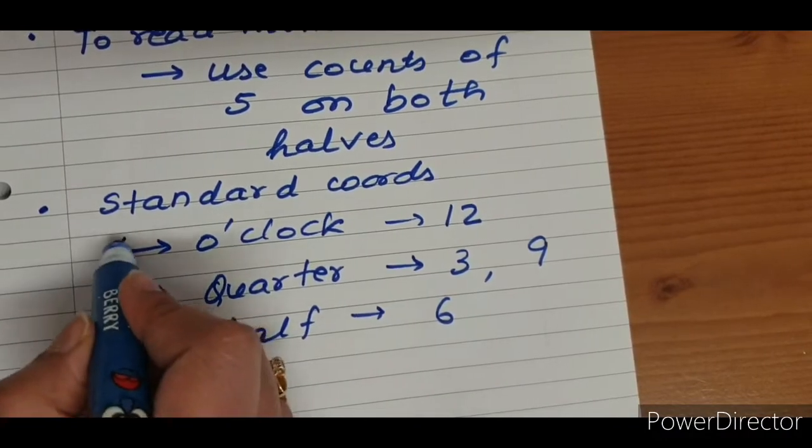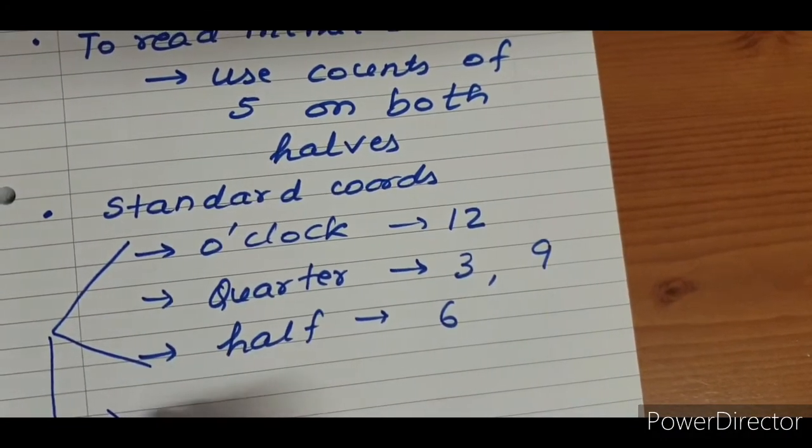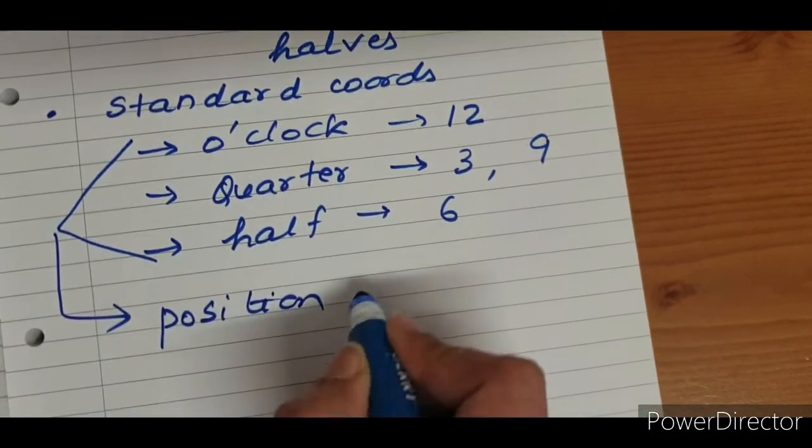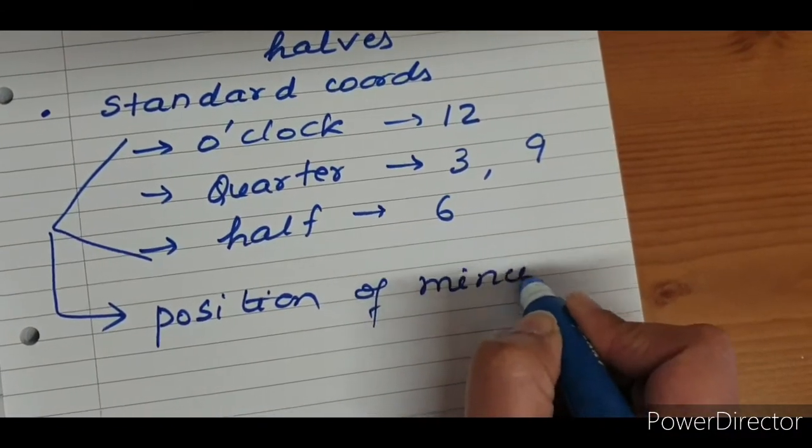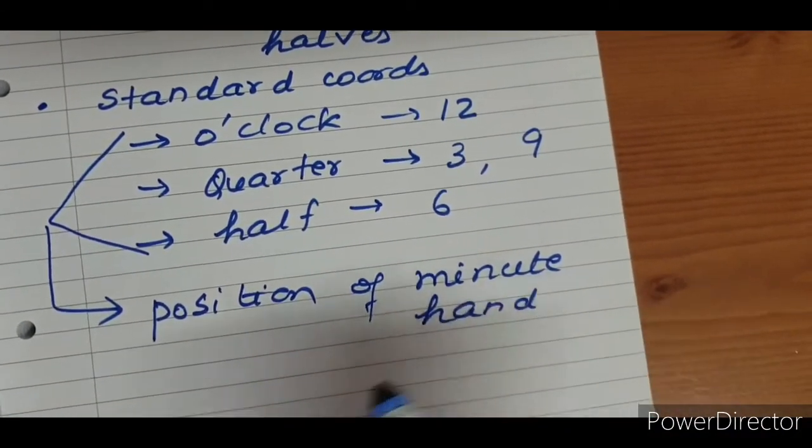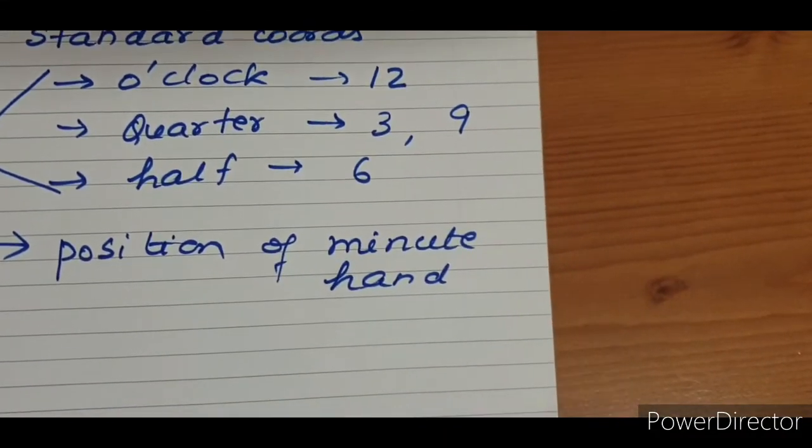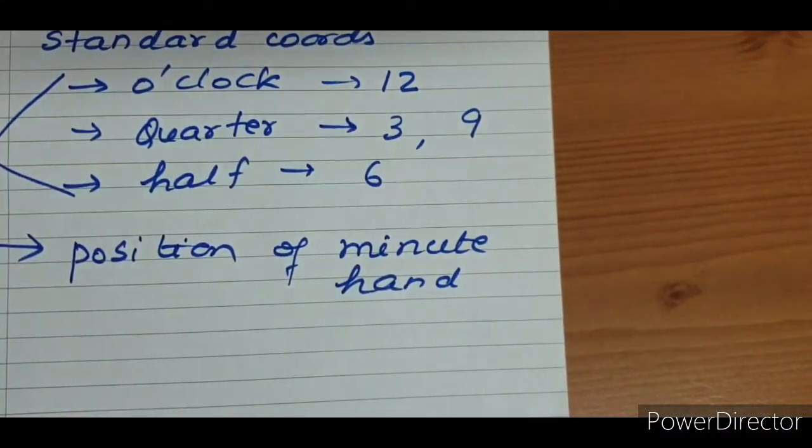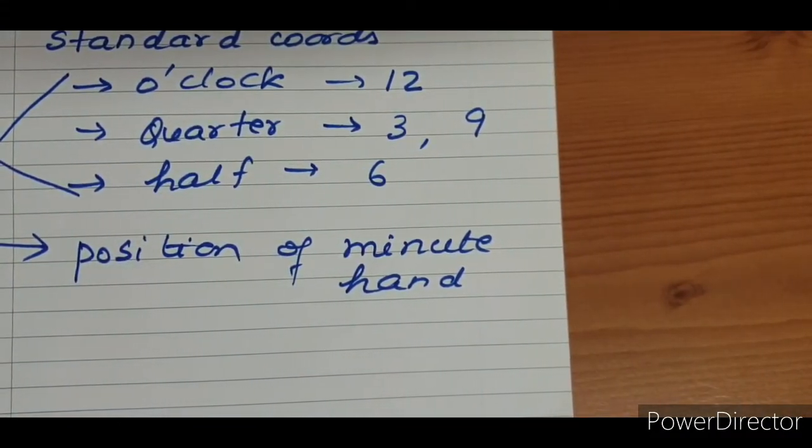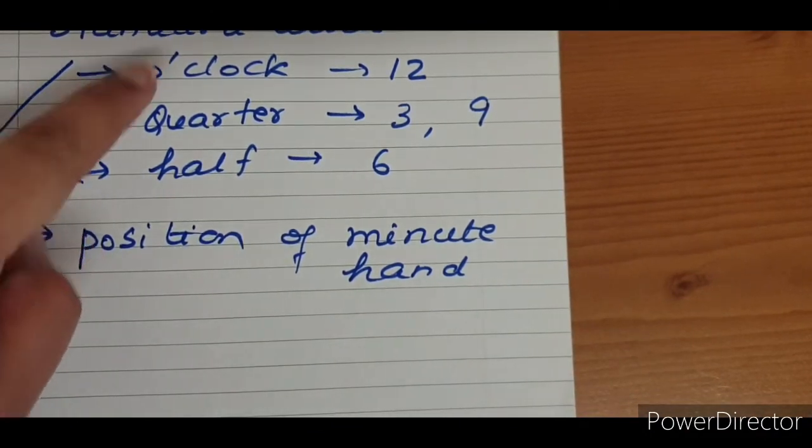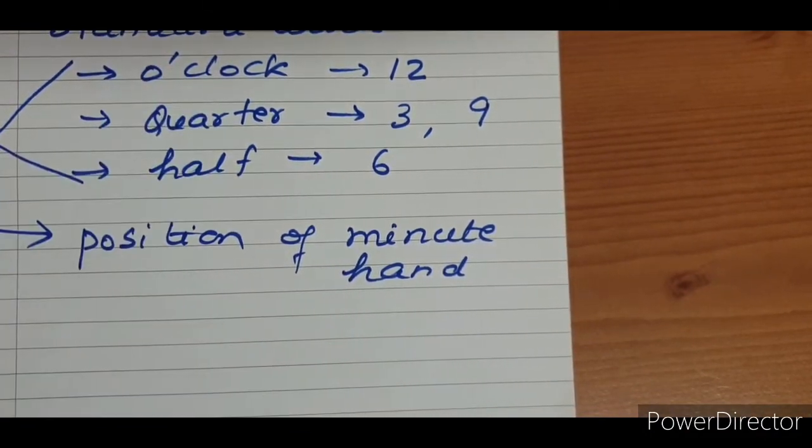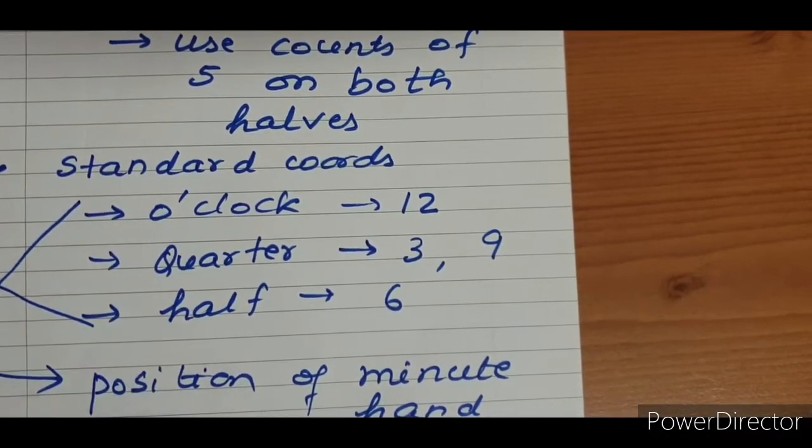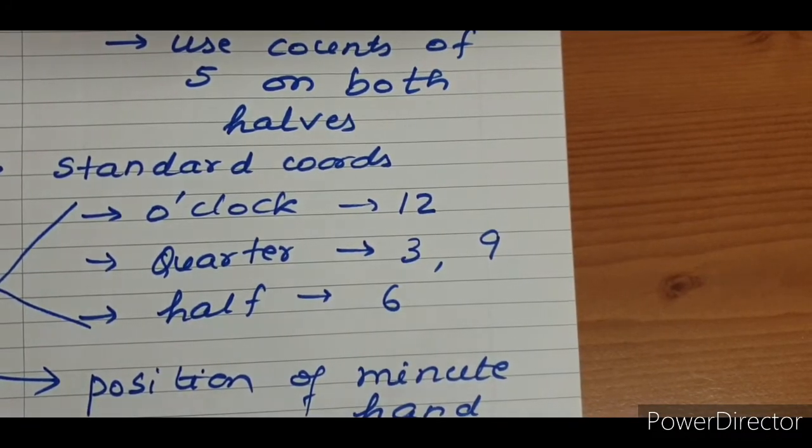These numbers are used for the position of minute hand. So, whenever my minute hand is pointing to any of these numbers, 12, 3, 6, 9, instead of using minutes in numbers, we use quarter, half, o'clock. We use standard words used in analog time.